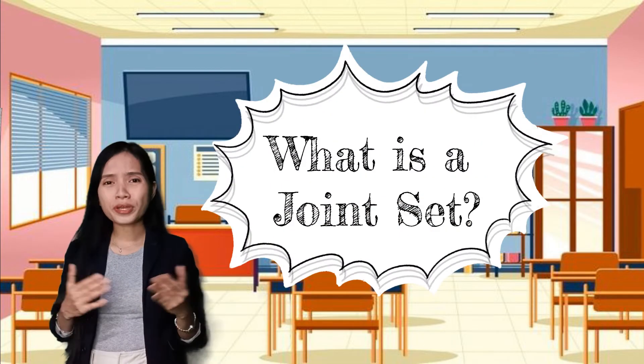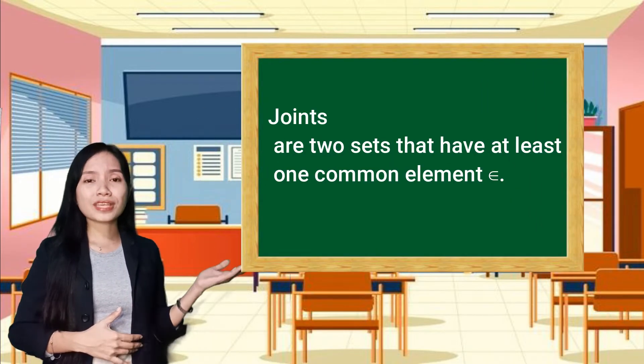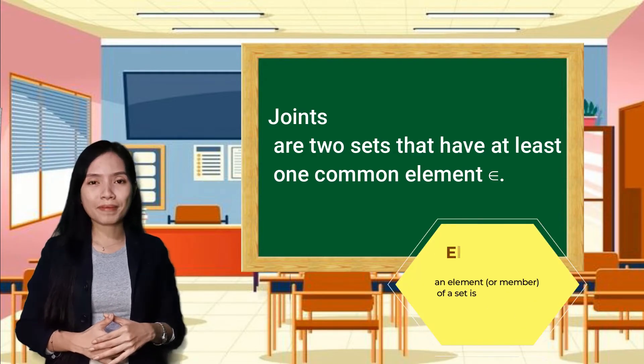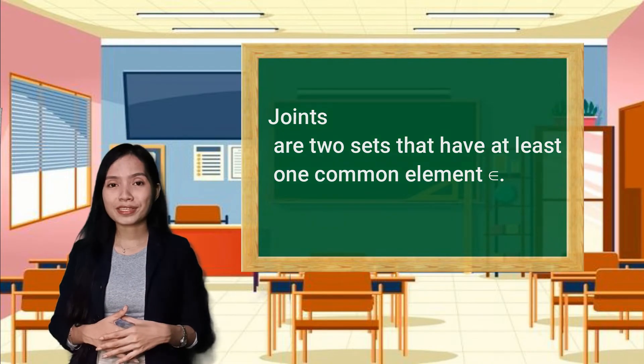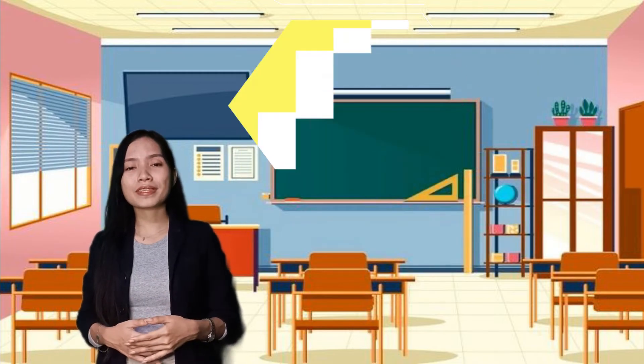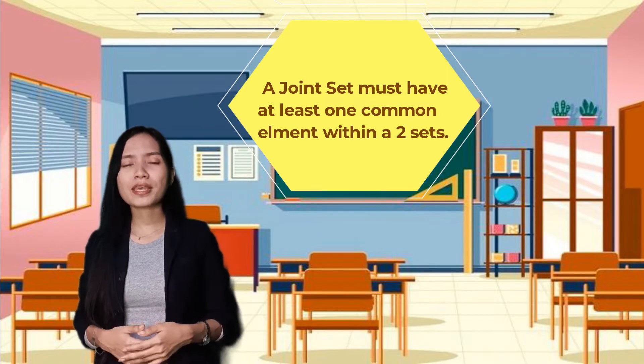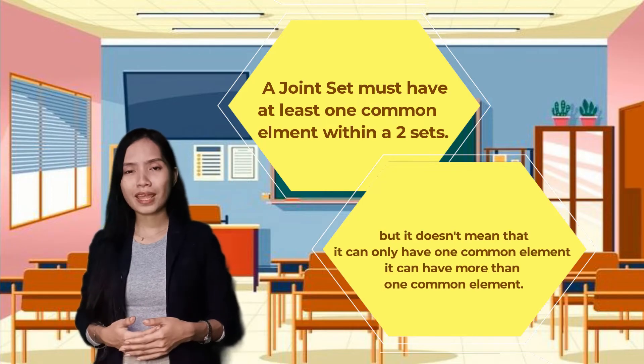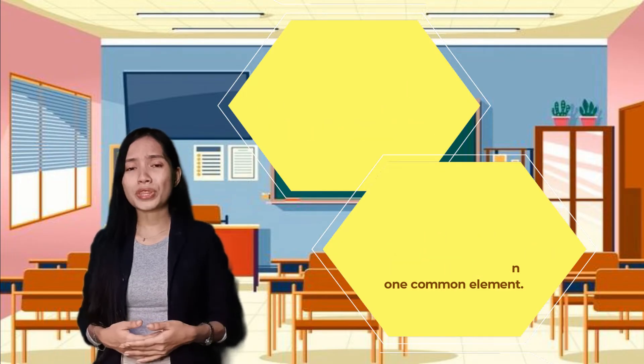So what is a joint set? According here, joint sets are two sets that have at least one common element. When we say element, these are numbers or digits. So joint set simply means that if there are two sets, there must be at least one common element or number within that two sets. But it doesn't mean that it should only have one common element. It could have more than one common element or number within that two sets.